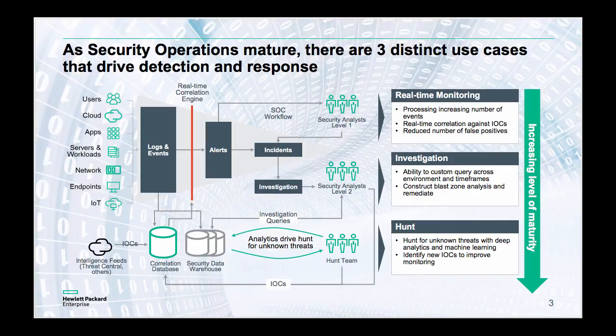There's another element we call the hunt team — level three or tier three. This is a separate team that takes information and data from level two analysts and uses it to drive intelligence-led investigations and hunting activities. This isn't necessarily triggered from an alert or real-time correlation. It's driven by intelligence, relevance, and context — for example, unusual patterns of activity identified by the level two analysts.